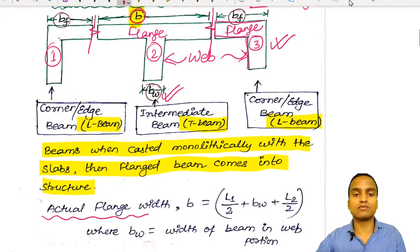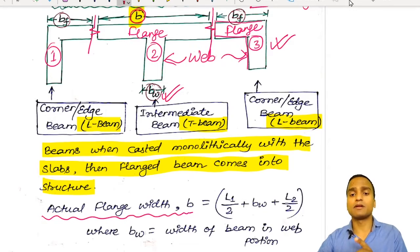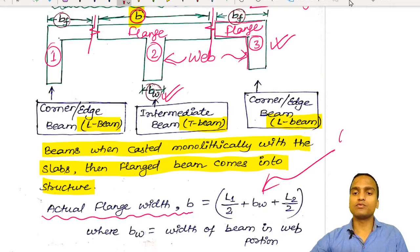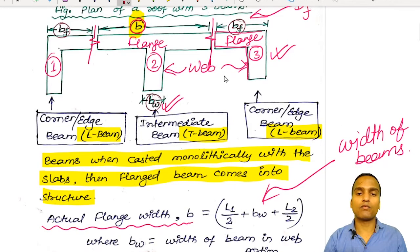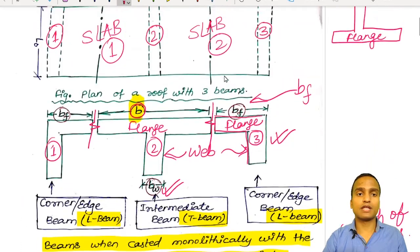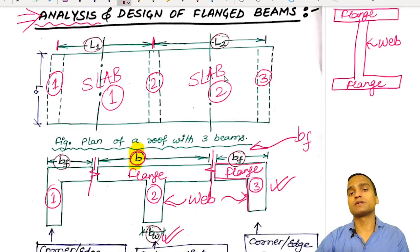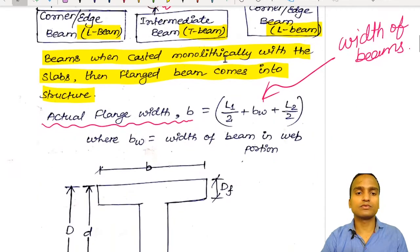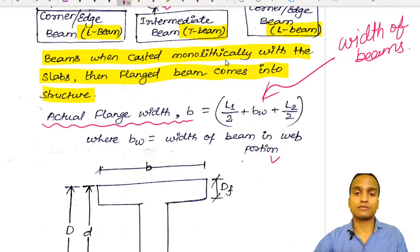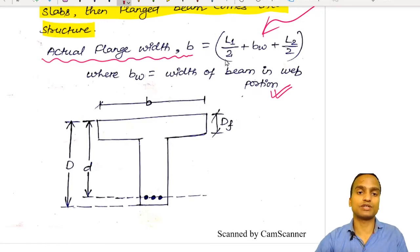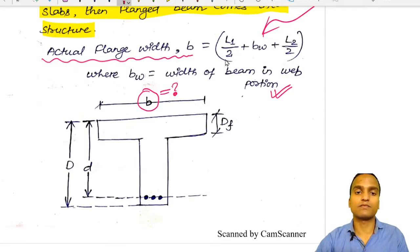For the intermediate beam, the actual flange width B is equal to L1/2 + Bw + L2/2. Here Bw is the width of the beam. L1 and L2 are the center-to-center distances between consecutive beams in the continuous slab, as seen in the plan figure. This is the diagram of the intermediate beam being shown here.